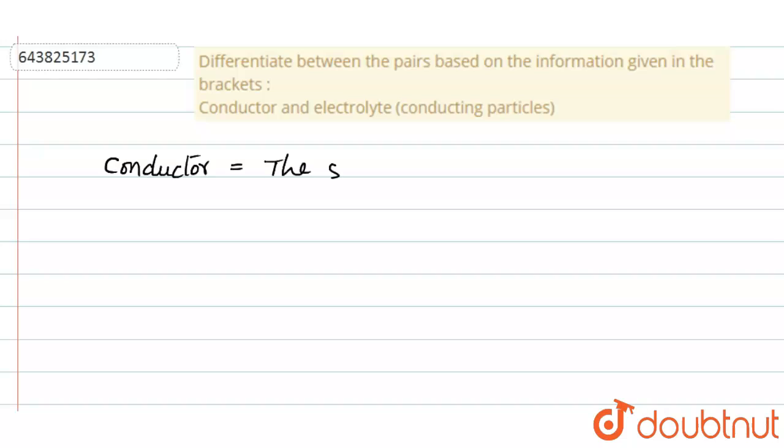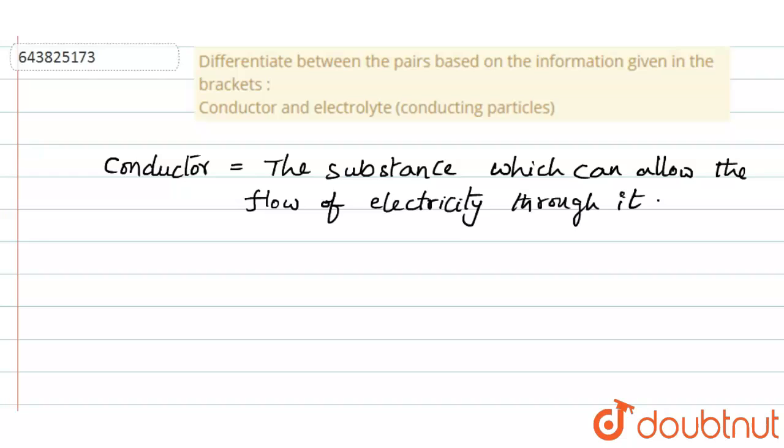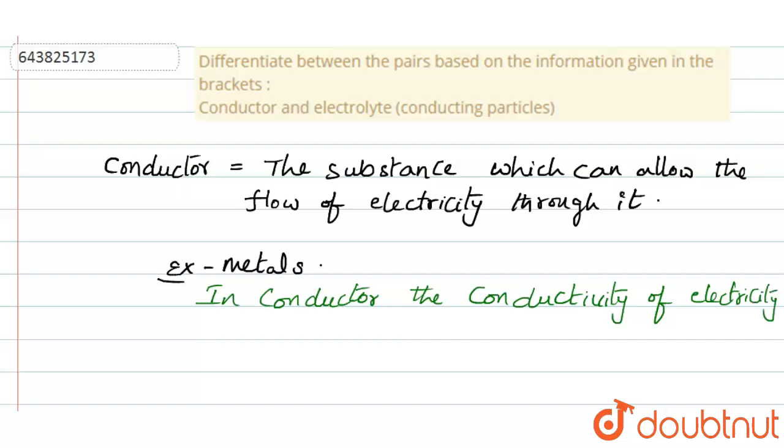So first of all, conductor. What is meant by conductor? Conductor is the substance which can allow the flow of electricity through it. For example, metals.